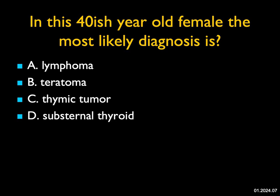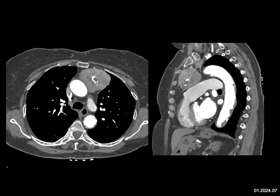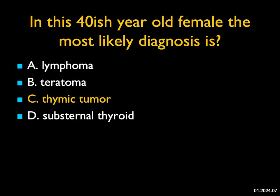In this 40-year-old female, the most likely diagnosis is? I see a mass in the anterior mediastinum — it's solid and has some calcification, somewhat eccentric. This could be lymphoma, which can calcify usually after treatment, but I don't see any other mass. It could be a teratoma, which can calcify, but teratomas have more coarse calcifications and usually don't occur in 40-year-olds. This is not substernal thyroid. The best diagnosis for an eccentric anterior mediastinal mass with calcification is a thymic tumor — this could be a thymoma or a thymic carcinoma. In fact, this was a thymic carcinoma. Thymic tumors are a very good choice.